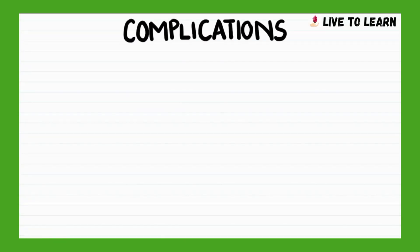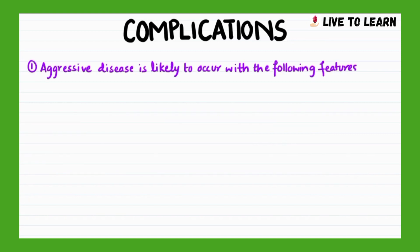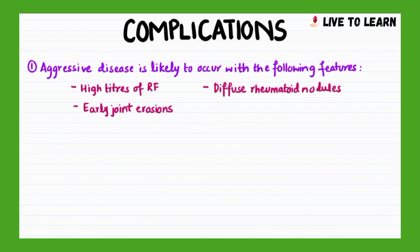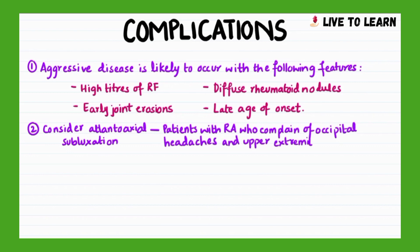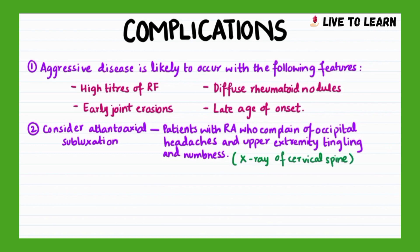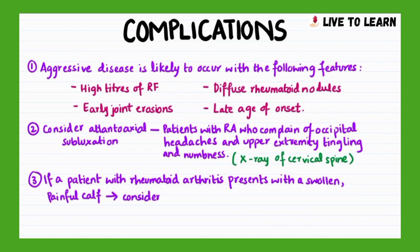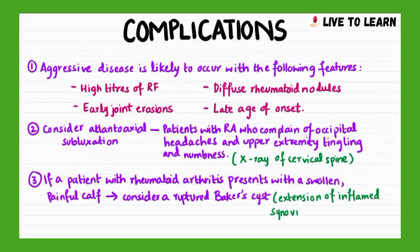Aggressive disease is likely to occur with high titers of rheumatoid factor, early joint erosions, diffuse rheumatoid nodules, and late age of onset. It is important to consider atlantoaxial subluxation in patients with rheumatoid arthritis who complain of occipital headaches and upper extremity tingling and numbness; an X-ray of the cervical spine should be ordered in such circumstances. If a patient with rheumatoid arthritis presents with a swollen, painful calf, consider a ruptured Baker's cyst, which is basically an extension of inflamed synovium into the popliteal space.